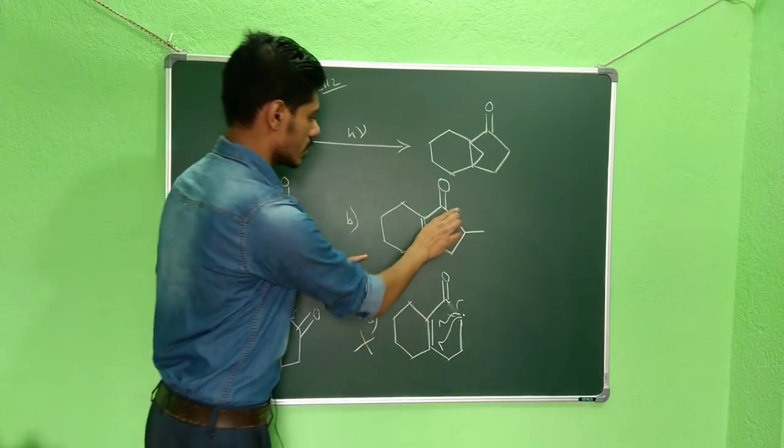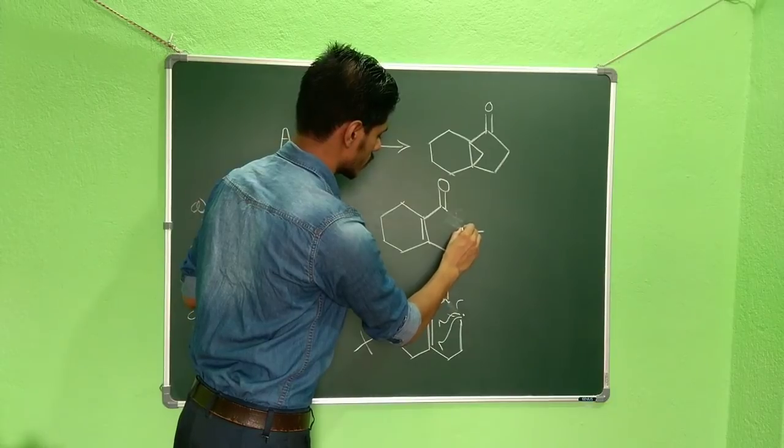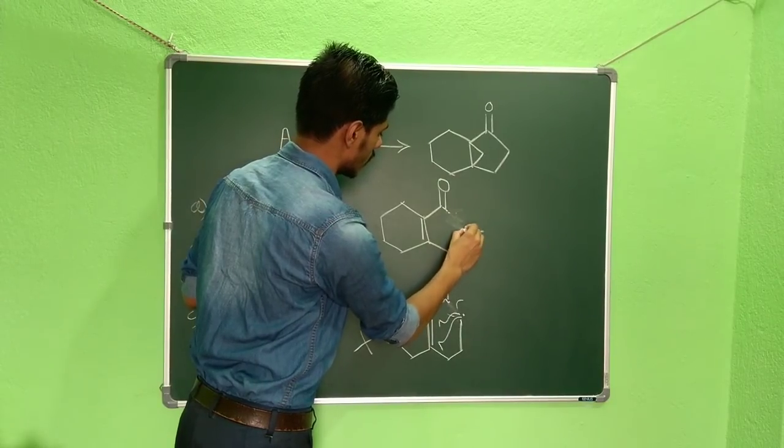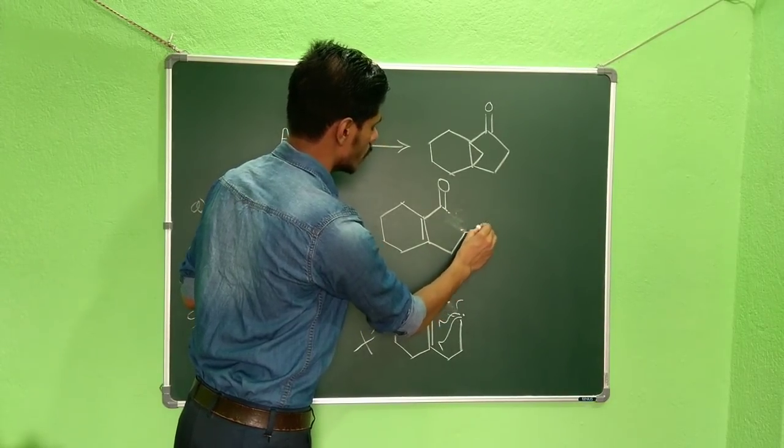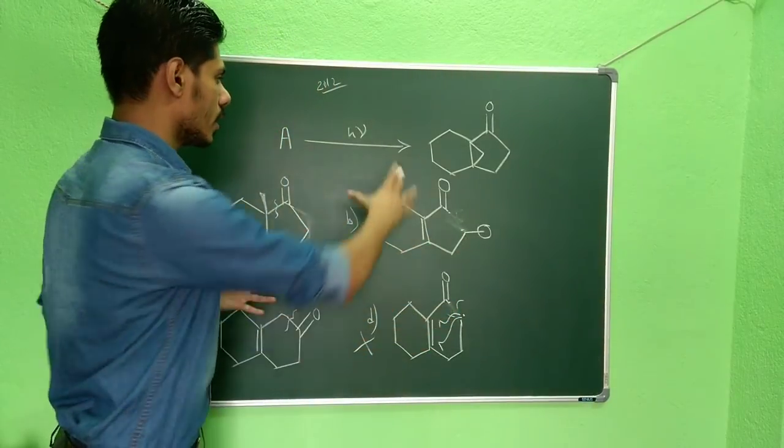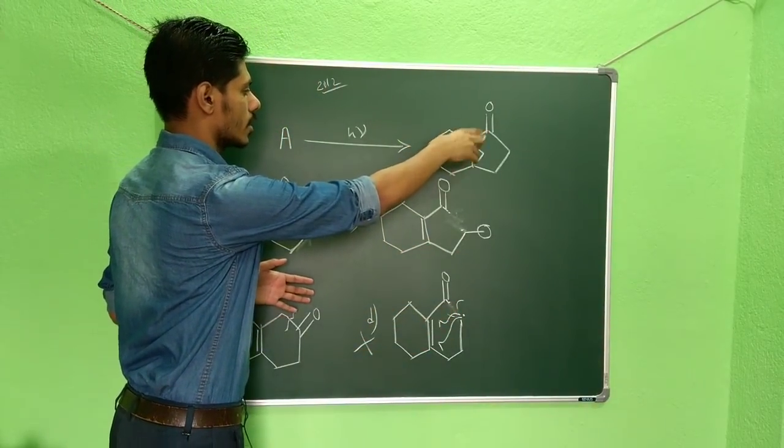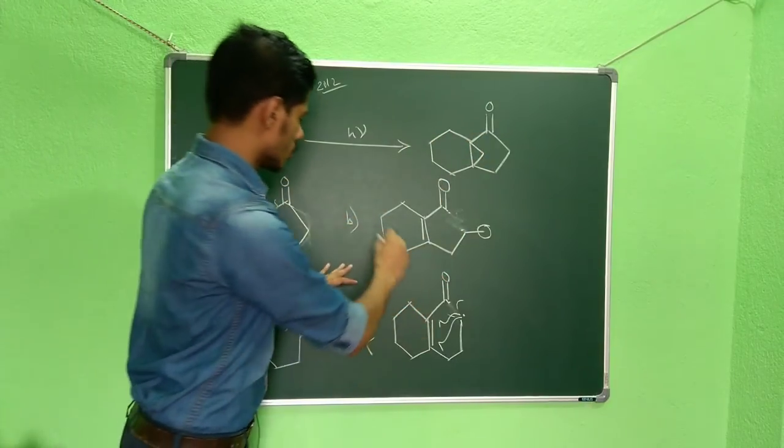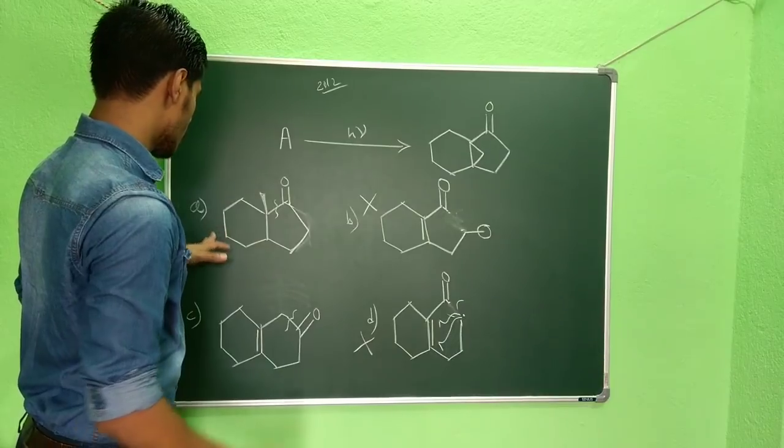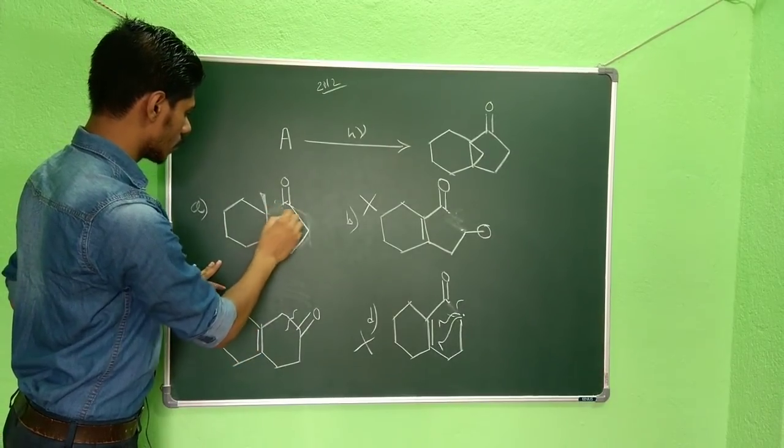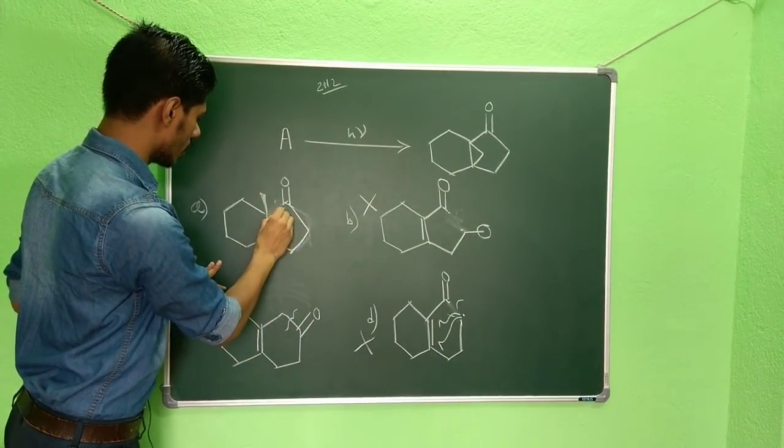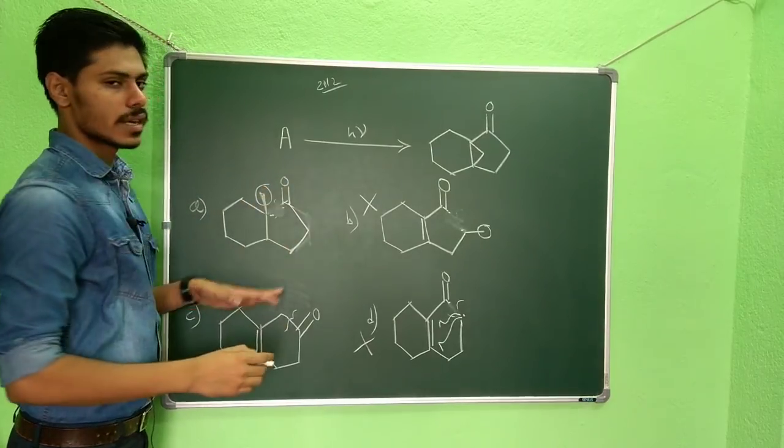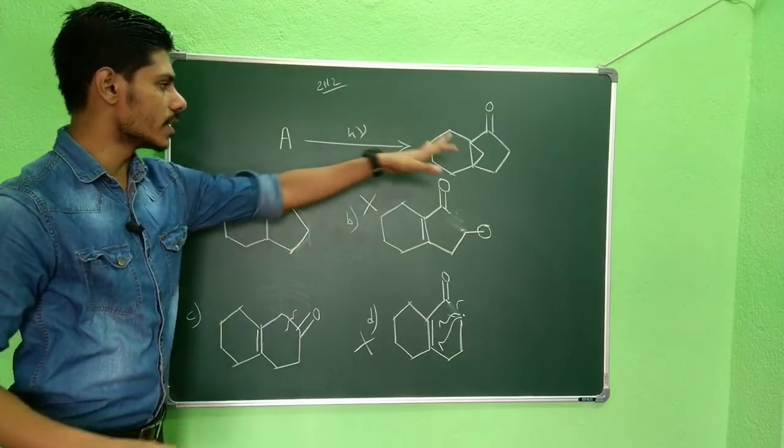Now in option B you can see if the dot generates over here and here, you can see this group is intact and in our product you can see there is no methyl group, so this cannot be the answer. In option A you can see if the dot generates over here and here, then also this methyl group is intact. So the methyl group is not retained in the product, so these are not the options.